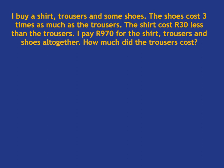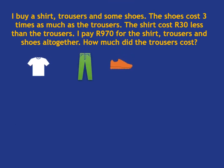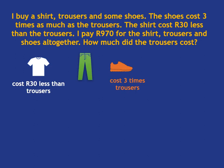Instead of jumping straight into trying to write an equation, it's actually often very useful to really just summarise this so we don't get lost in all the words and we're very clear of what's going on. So let's go through it step by step. The shoes cost three times as much as the trousers, the shirt costs 30 rand less than the trousers, the total cost is 970 rand, and we need to find the cost of the trousers. Now I look at this little picture and it's very clear to me what's going on.